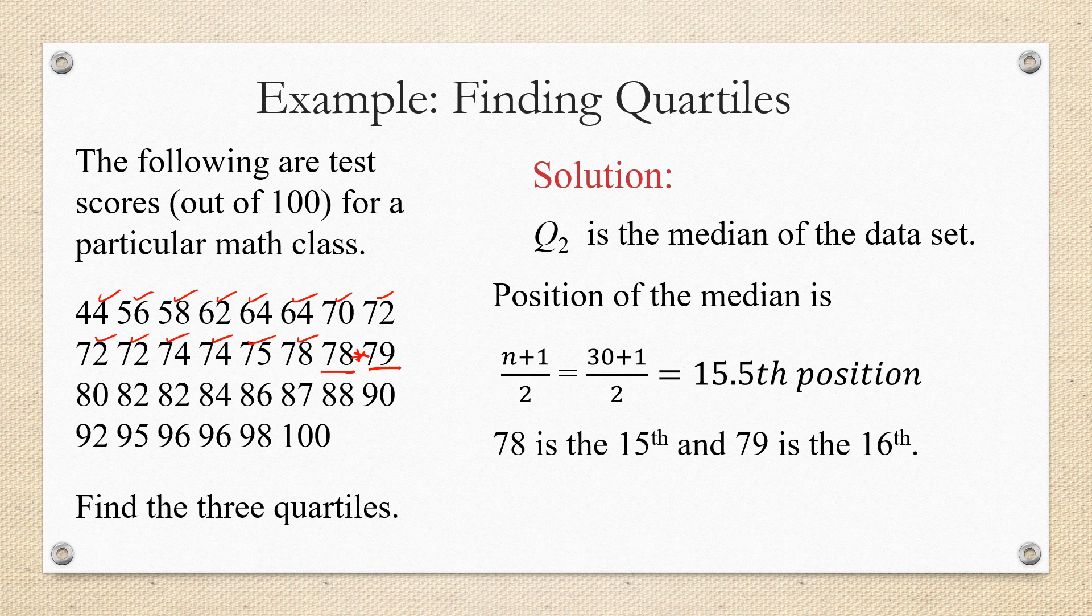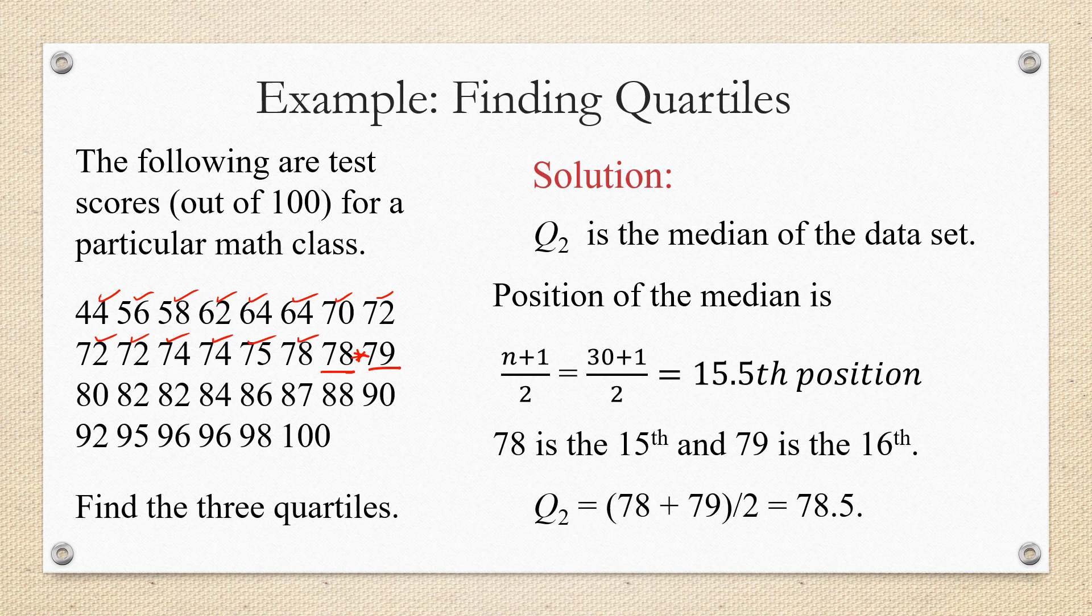Even though there's not actually a data value there, we're going to find the value halfway between 78 and 79, which is 78 and a half. And you can always find the data value between two given values by adding them together and dividing by two. So Q2 is going to be 78 plus 79 over two or 78.5.